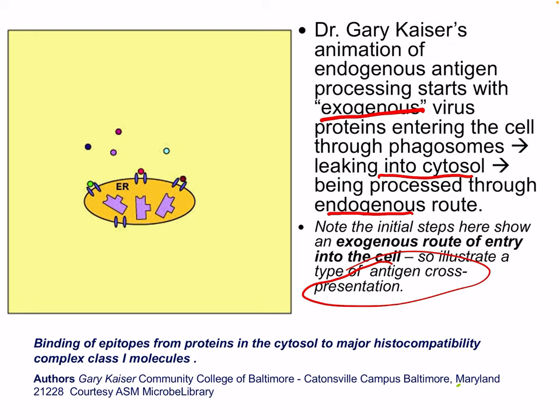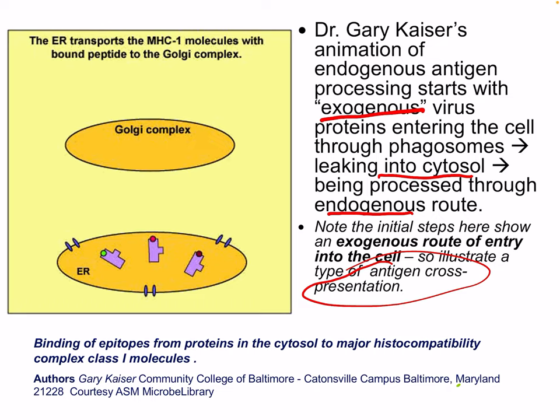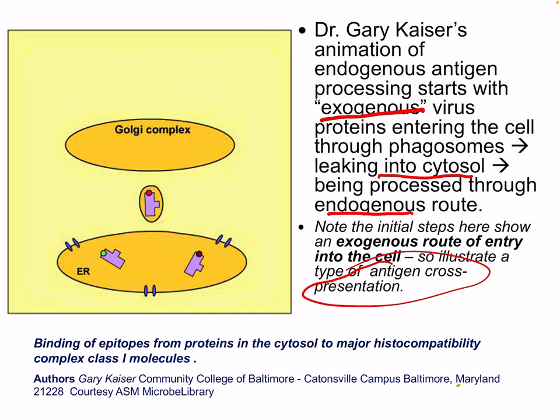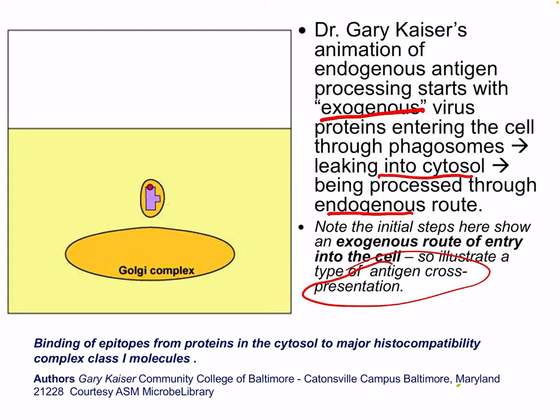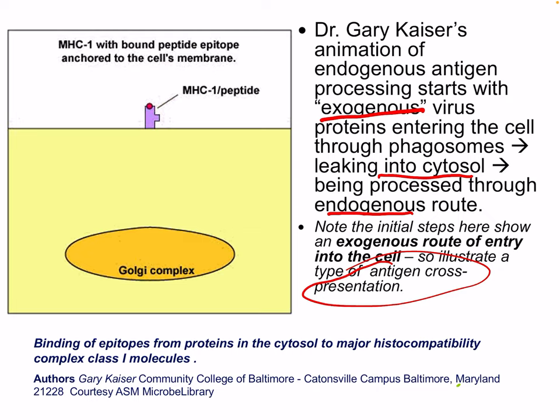The ER transports MHC class 1 molecules bound to the peptide to the Golgi apparatus or complex. The Golgi complex then transports the MHC class 1 peptide complex to the surface of the cell, and now we have our MHC class 1 peptide presented.